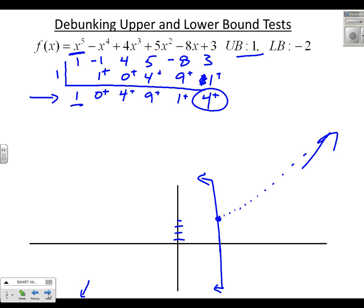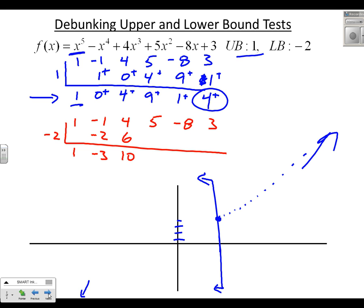Now let's look at the lower bound for this example. The same polynomial: 1, negative 1, 4, 5, negative 8, 3. It's suggested that negative 2 is a lower bound. Multiplying and adding through: 1 times negative 2, add, times negative 2, add, times negative 2, add, times negative 2, add to get positive 22, times negative 2 gives negative 44, and the final result is negative 41.